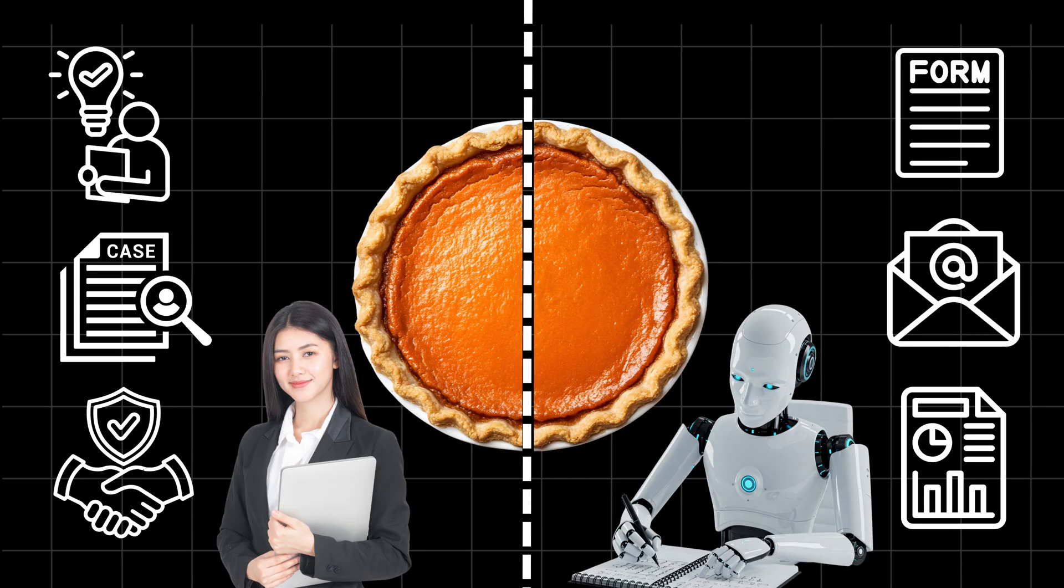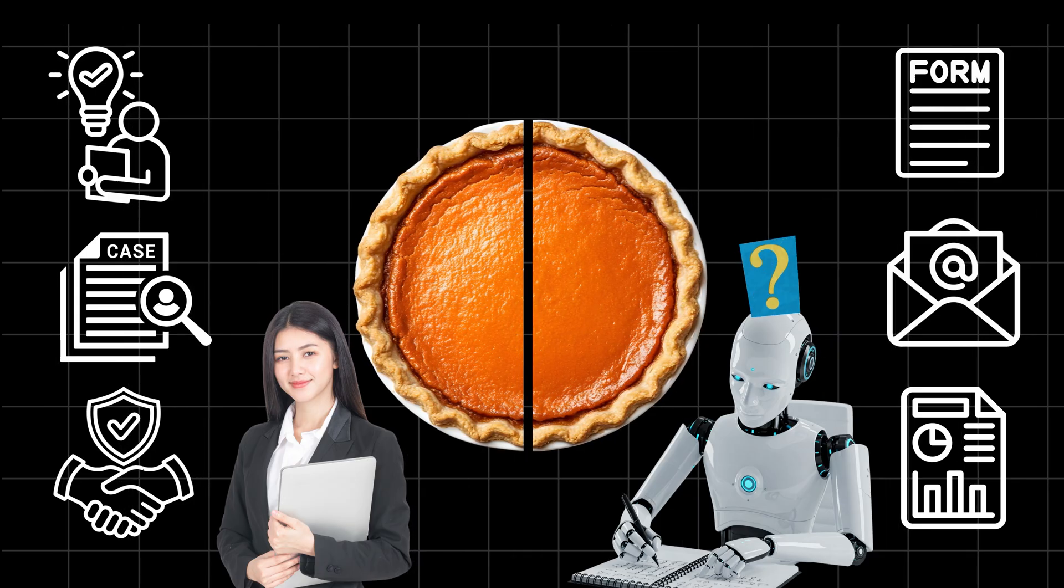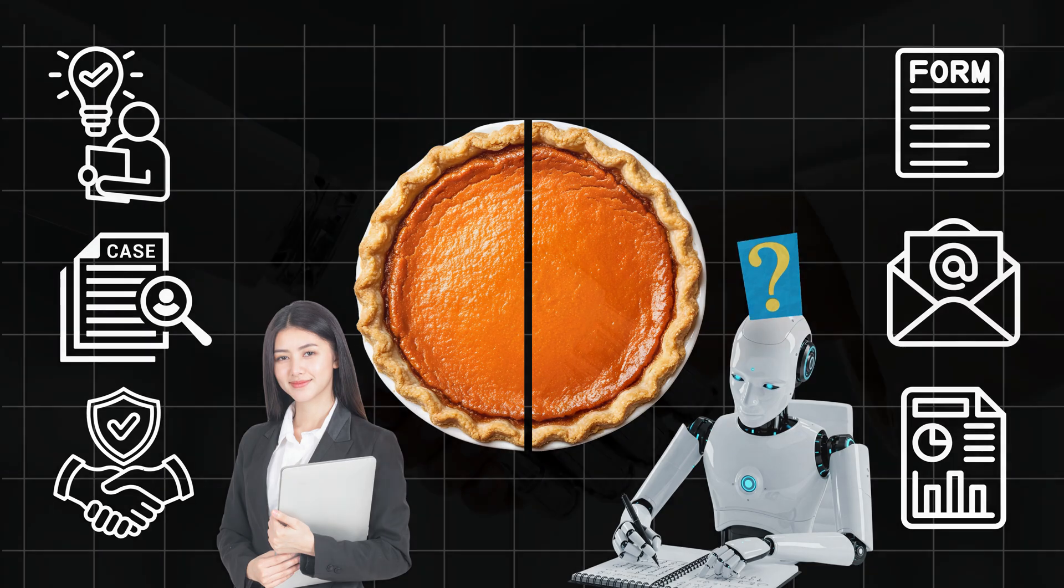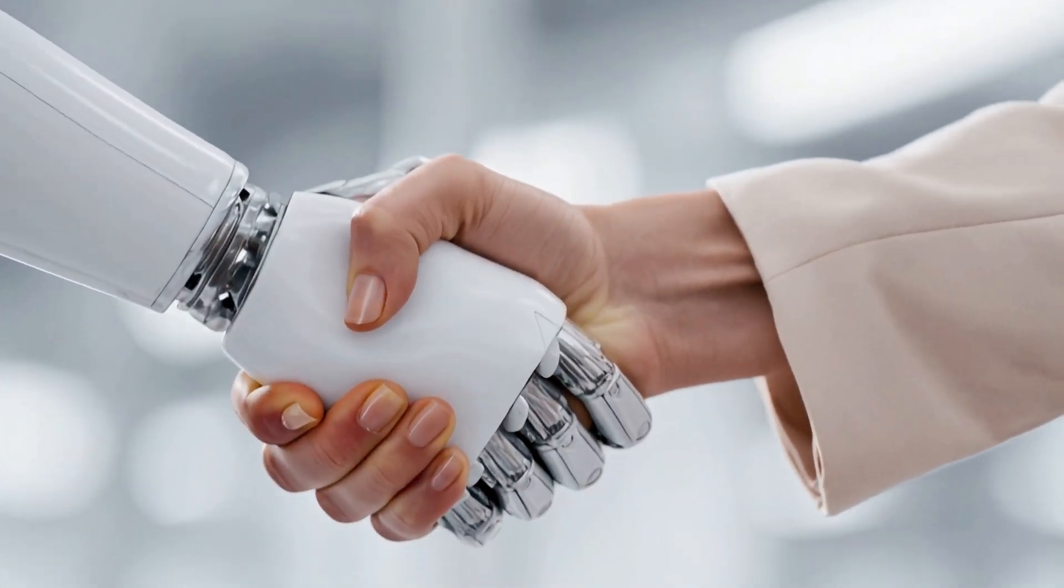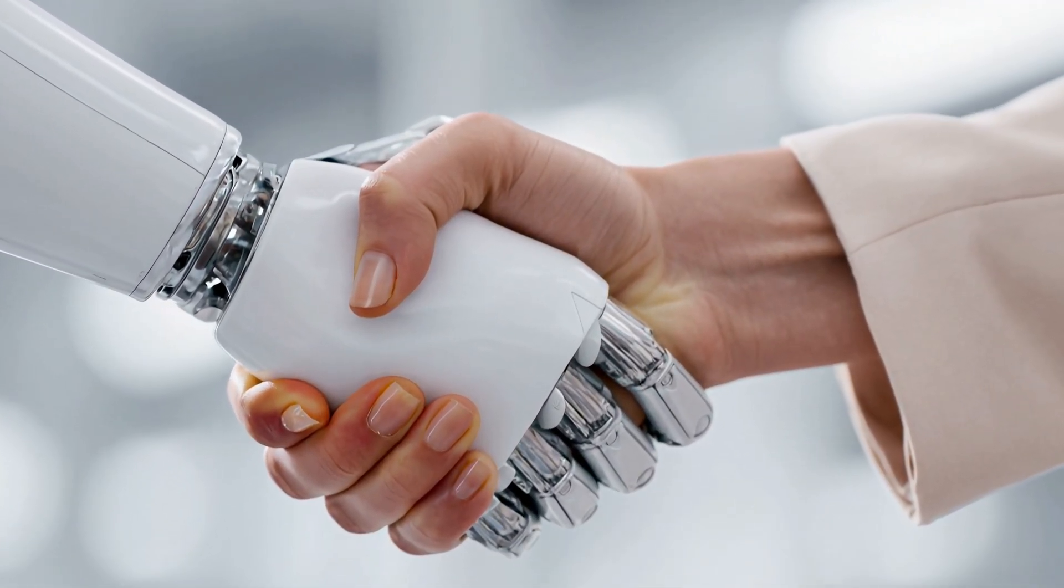AI is good at eating the repetitive slices. It still struggles with judgment, responsibility, and relationships. That's why whole jobs rarely disappear overnight. Most jobs are a mix.